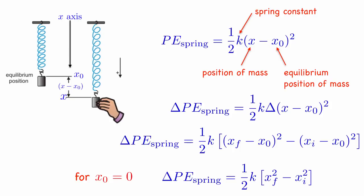We can make things a little simpler if we choose our coordinates so that x0 is equal to 0. Then the change in the spring potential energy is 1/2 k(x_final² - x_initial²).